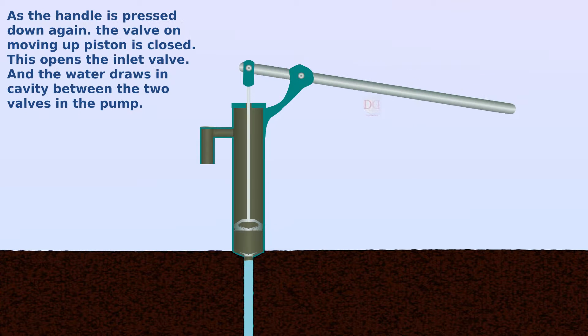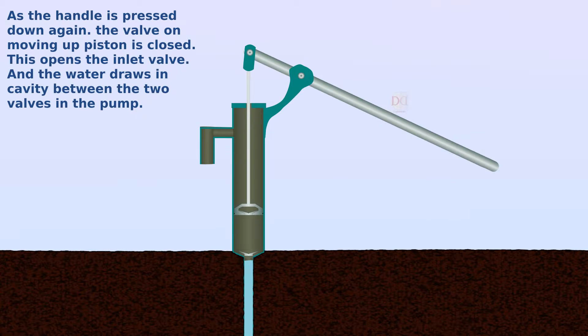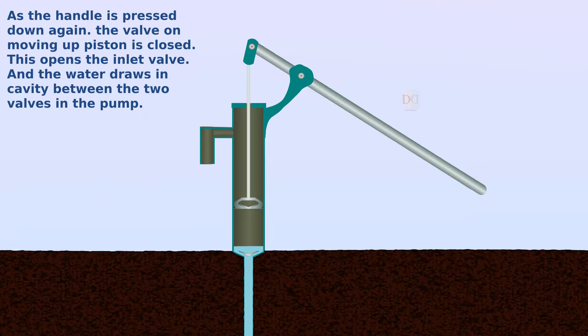As the handle is pressed down again, the valve on the moving piston is closed. This opens the inlet valve and the water draws into the cavity between the two valves in the pump.